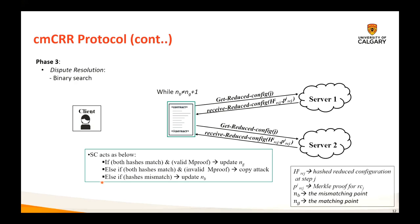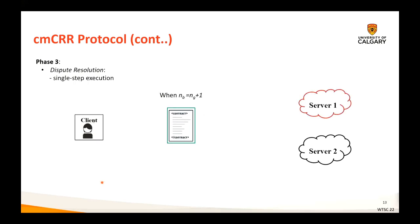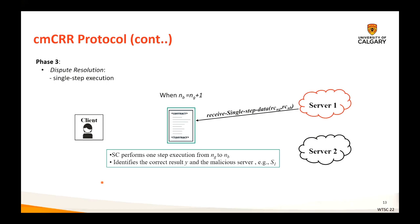These challenge-responses are continued for several rounds until two consecutive indices j and j+1 are found such that their responses match at index j but mismatch at index j+1. At this point, the smart contract performs a single step of the computation to identify the malicious server. The smart contract asks one of the servers, for example server 1, to reveal the reduced configurations for the two consecutive computation steps ng and nb in plain. Then the smart contract performs single-step execution from ng to nb, identifies the malicious server, and returns the output of the honest server to the client.